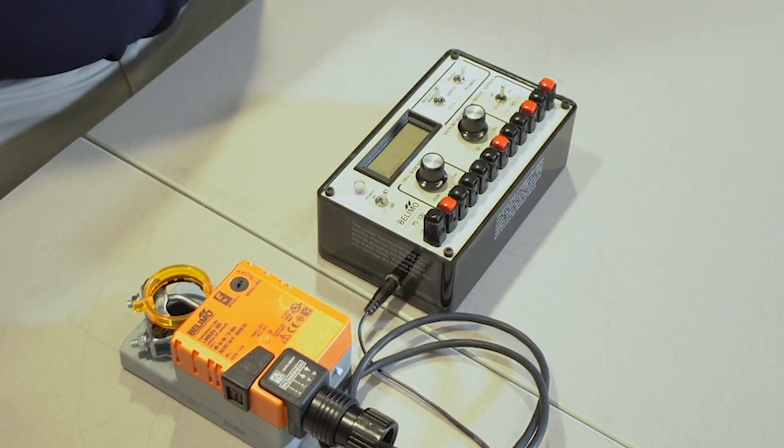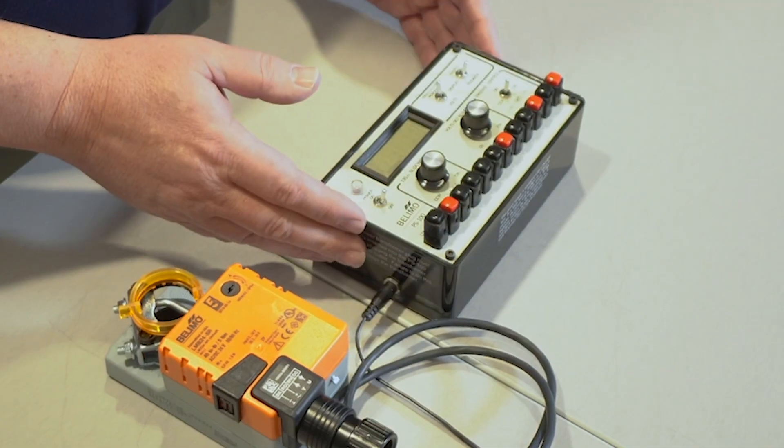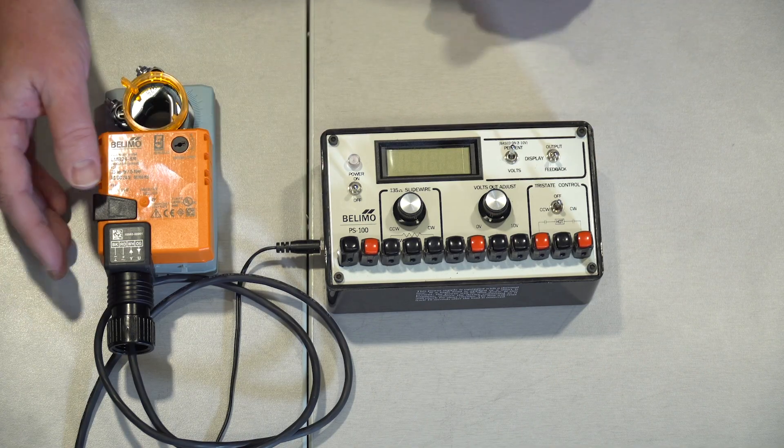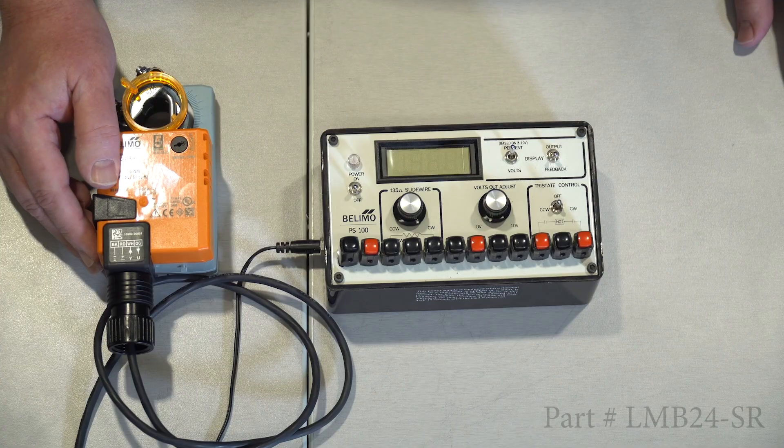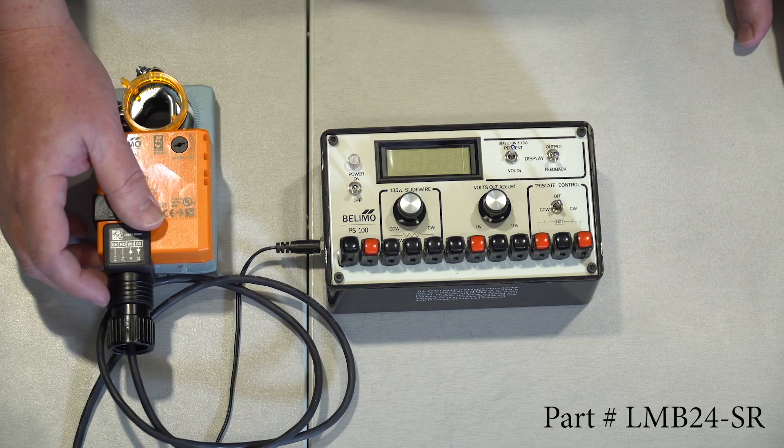Today I'll show you how to wire both a non-spring return and a spring return actuator using the Belimo PS100 power supply signal generator. Here I have an LMB24-SR, which is a 24 volt non-spring return actuator, which is modulating.